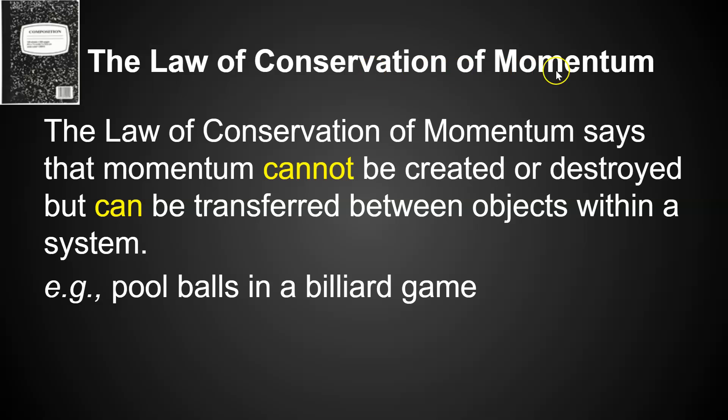So, the law of conservation of momentum says that momentum cannot be created or destroyed but can be transferred between objects within a system. For example, pool balls in a billiard game. So, you think about playing pool, you use the cue ball to hit other balls and then that ball causes things to move around and reflect, deflect, and so forth. And it transfers the momentum from one thing to the next.